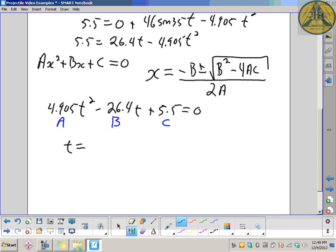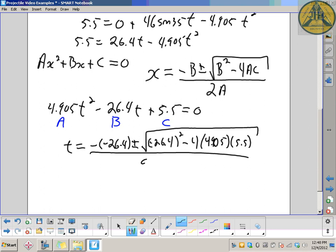So t equals negative, negative 26.4. Watch the double negative there. Plus or minus b squared, 26.4. Negative 26.4 squared. The negative will go away when you square it. Minus 4 times a, 4.905 times c, 5.5. And that's square rooted. All that over 9.81. 9.81 is 4.905 times 2.